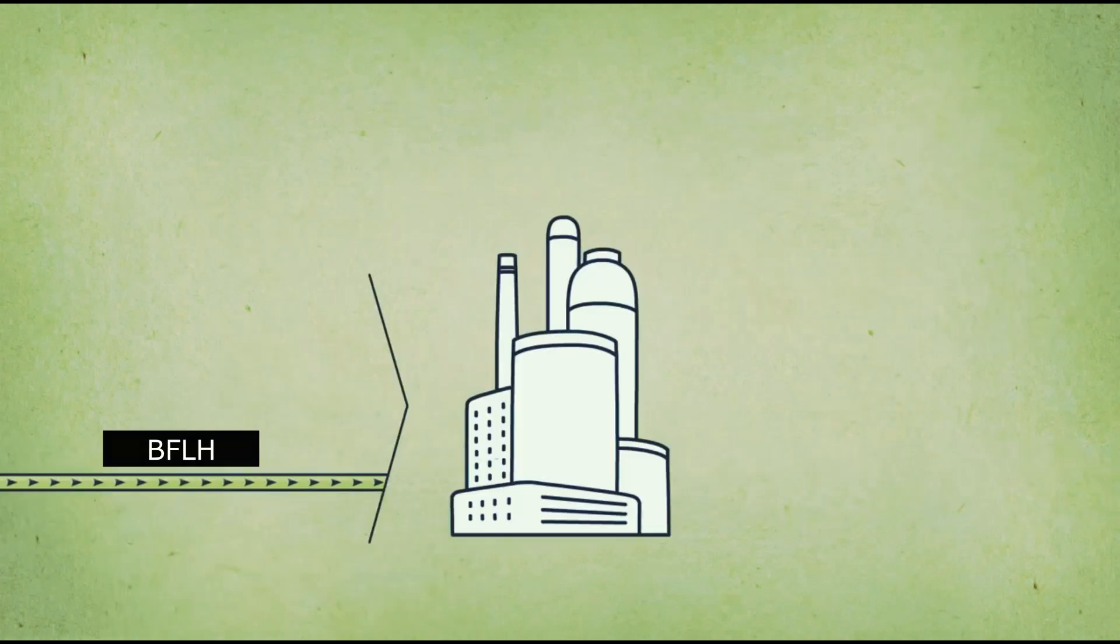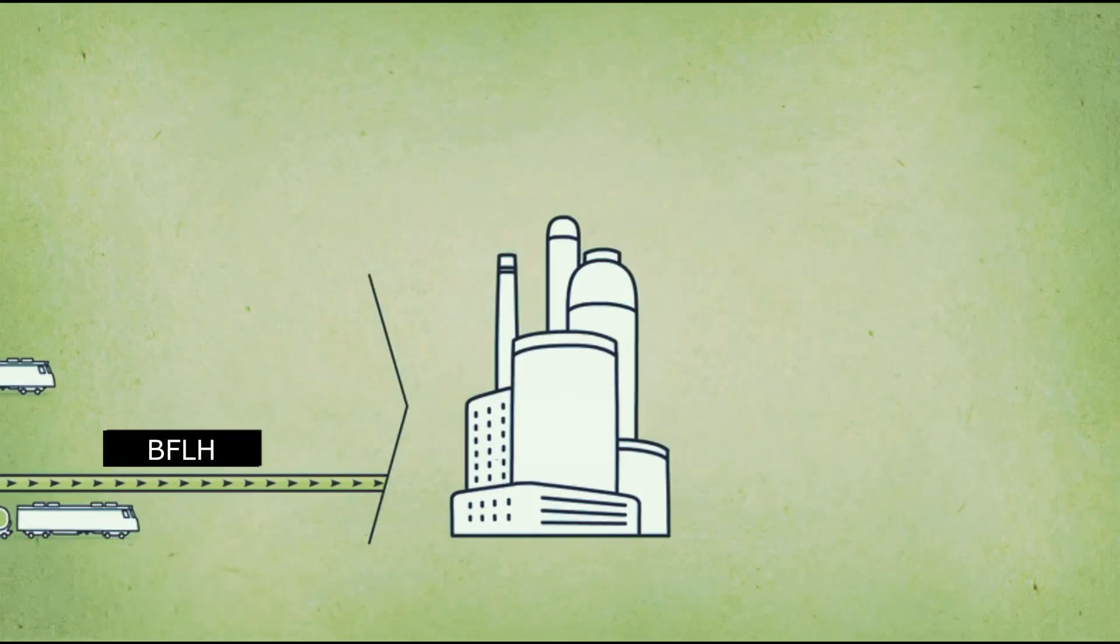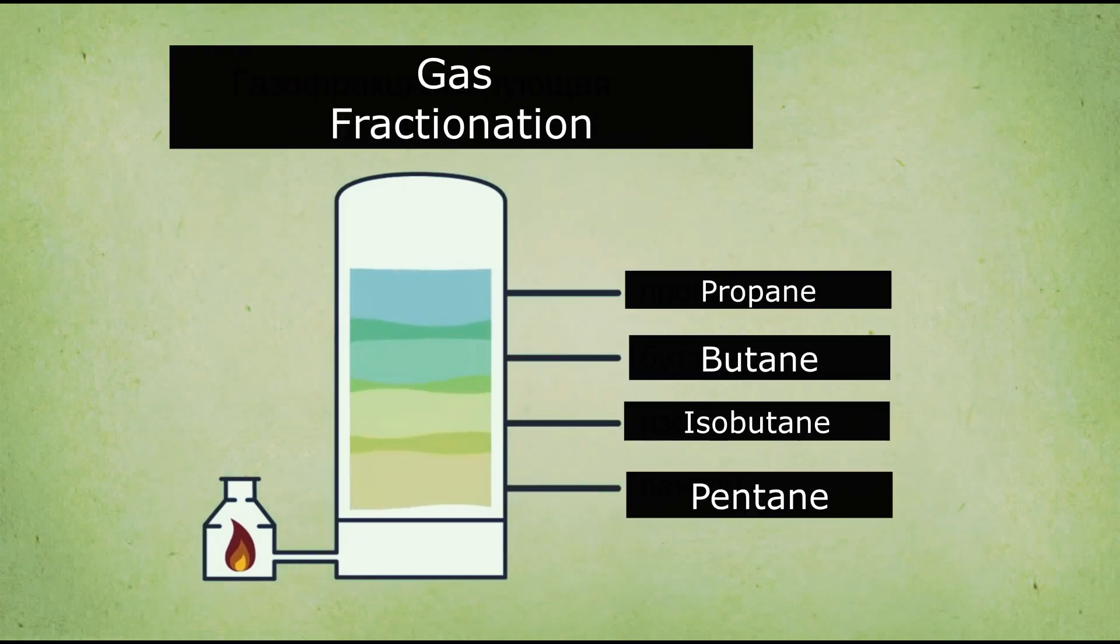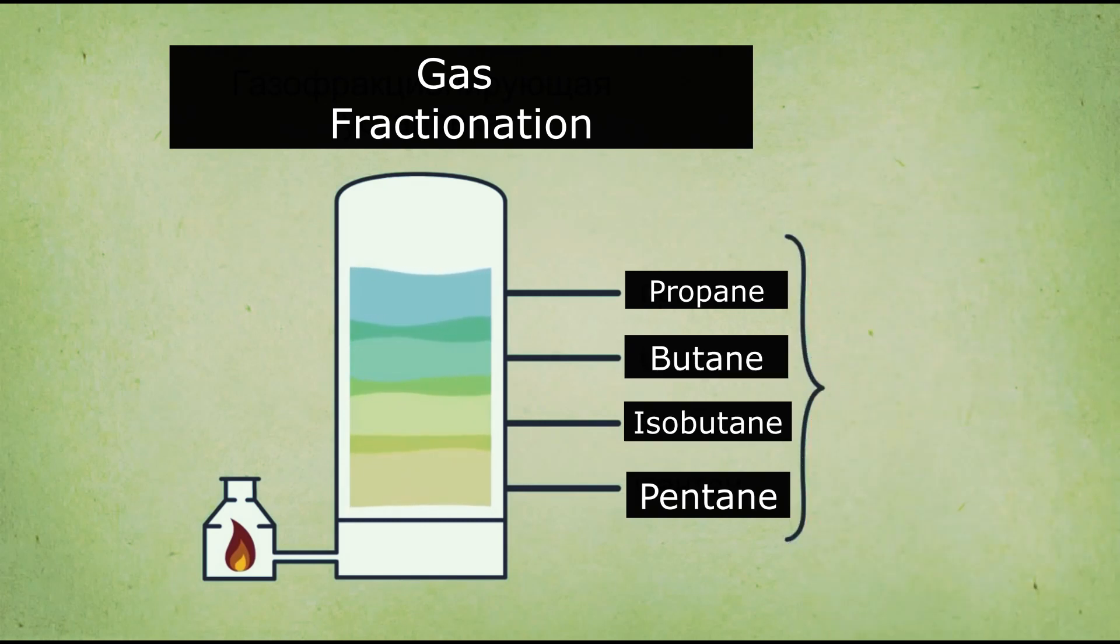BFLH is a valuable mixture of different substances that need to be divided into separate components. To do this, the oil that petrochemical plants also purchase from gas production companies undergo physical processing. This process is called gas fractionation. Each substance has its own boiling point, so in the column it is possible to divide the mixture into individual components.